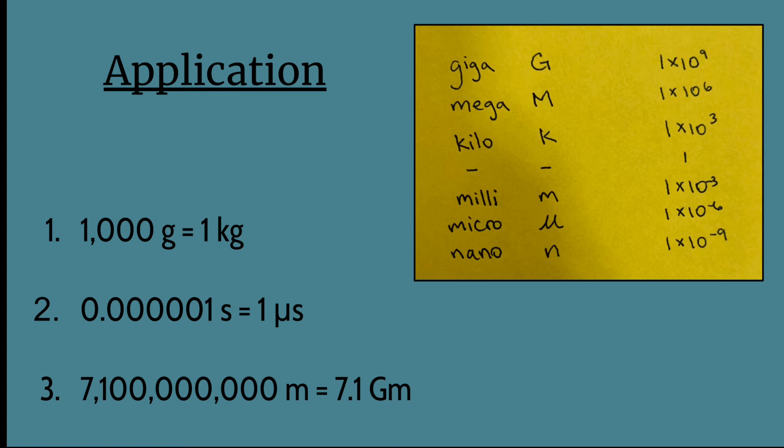Why? Well, it's because the decimal moved over six spaces to the right. And now it's a, oh my goodness, it's a microsecond. So now number three, we have 7,100,000,000. That's a big number. So let's go ahead and turn that into 7.1 gigameters.